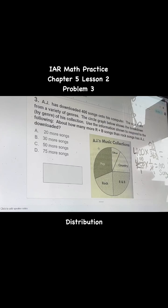AJ has downloaded 400 songs onto his computer. The songs are from a variety of genres. The circle graph below shows the breakdown by genres of his collection. Use the information shown to respond to the following: About how many more R&B songs than rock songs has AJ downloaded?